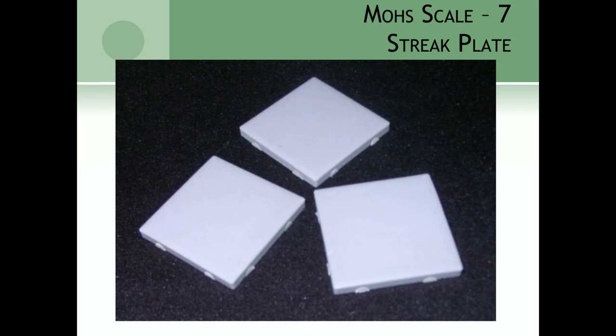We'll be using streak plates in our labs. Streak plates are made out of porcelain — unglazed porcelain is actually a seven. A lot of dinner plates are made out of porcelain, the same substance as a streak plate. That's why your knives don't scratch your dinner plate — plates are made of a substance harder than steel knives at 6.5. Otherwise every time you cut your food you'd also be cutting the plate.